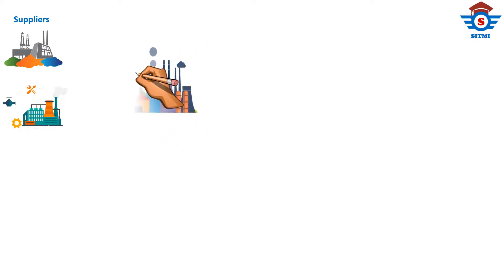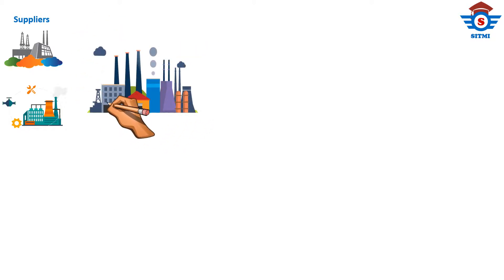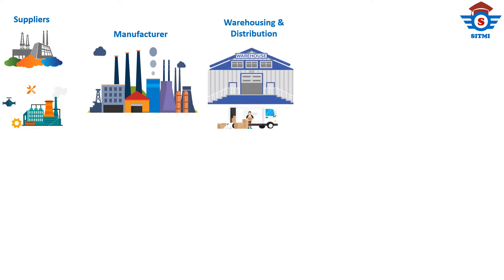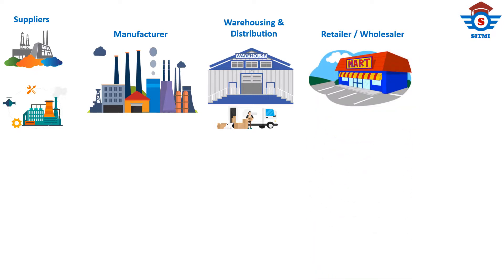The next partner in the supply chain is the manufacturer — usually an organization or business partner that makes final goods for sale, also referred to as finished goods. Next partner in the chain is the distributor, who is usually an organization or business partner that supplies goods to retailers where sales of finished goods are supposed to happen.